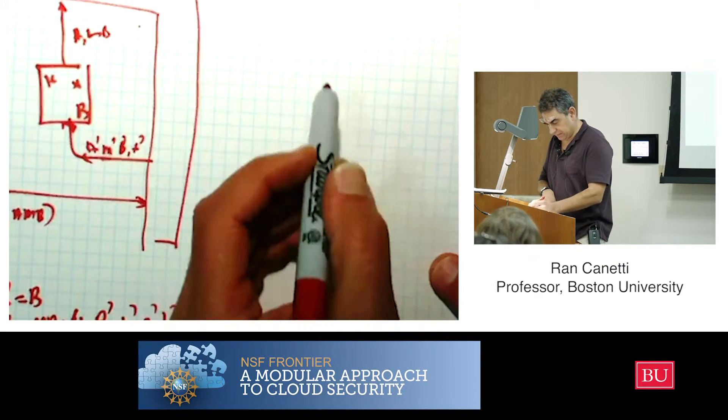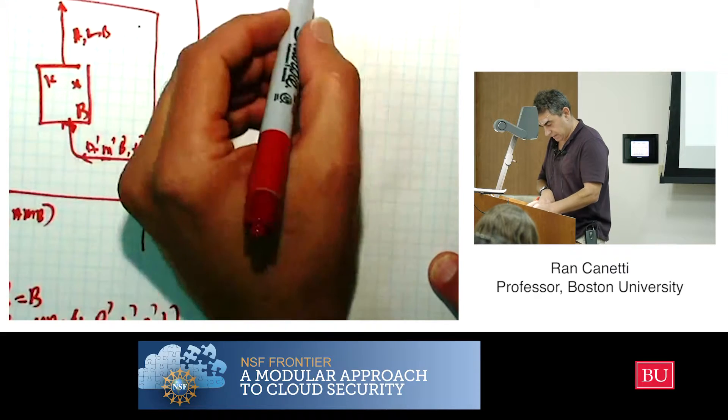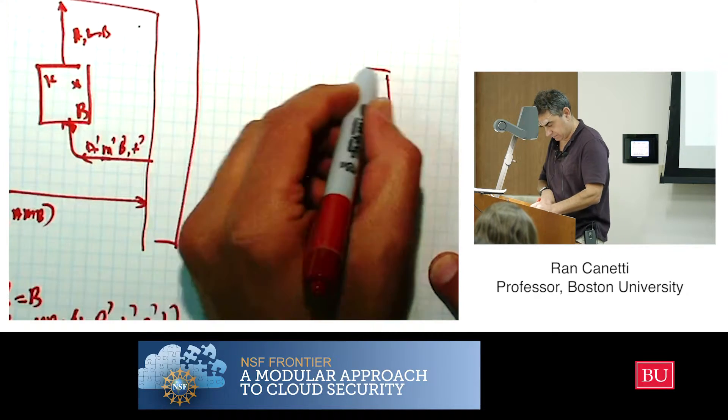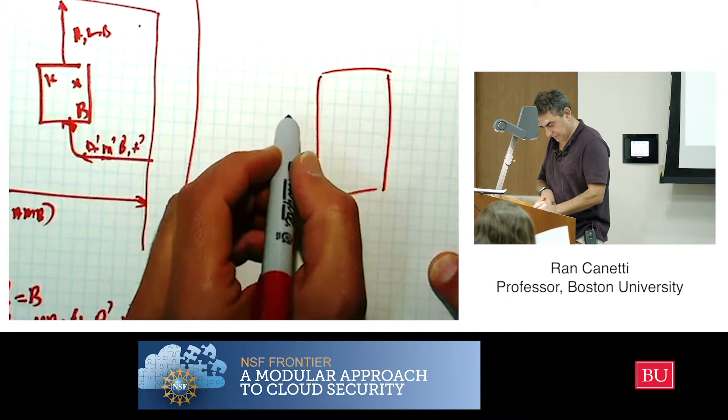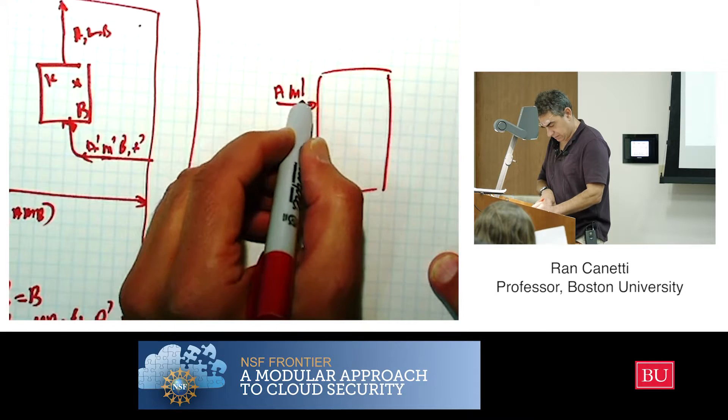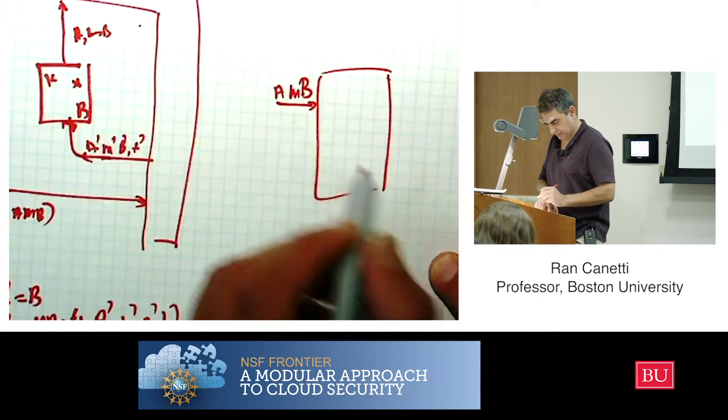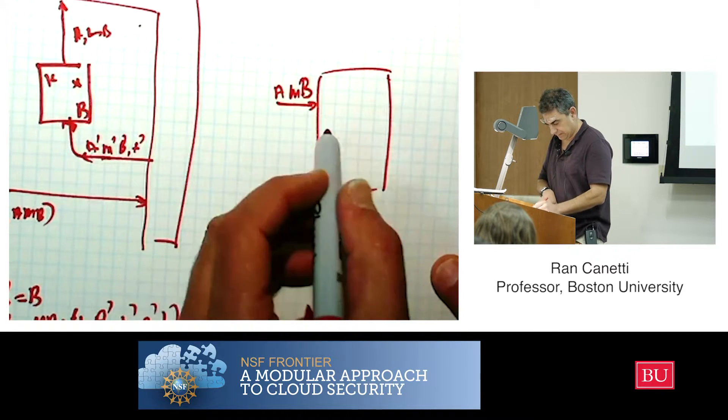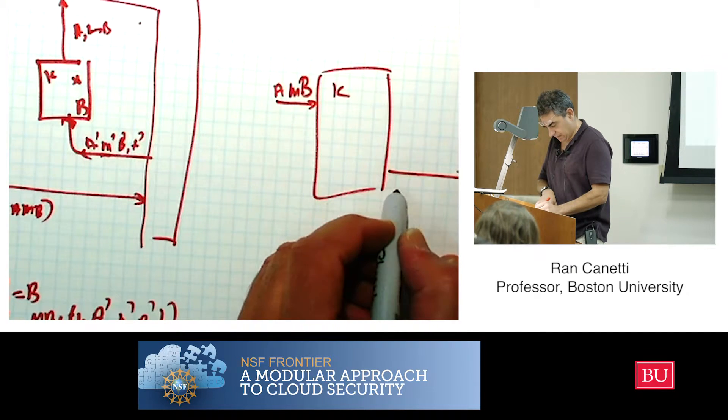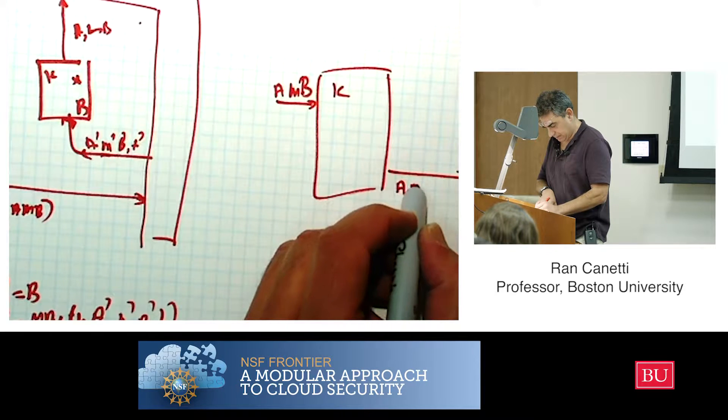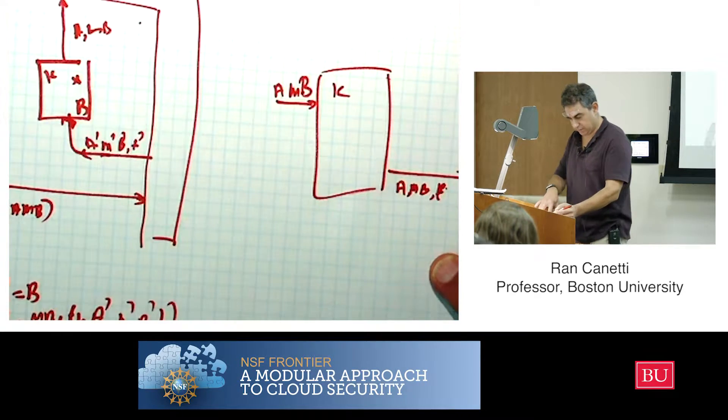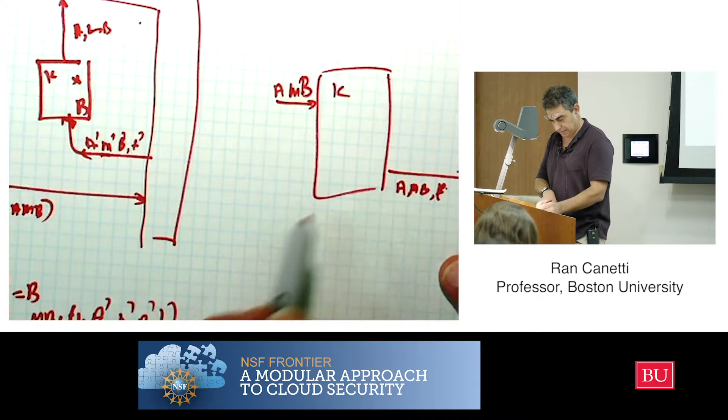Now, in the simulation, remember what's going on here. We have the simulator, he gets a message A, M, B from the ideal service. It chooses a key K, and then it sends to the environment A, M, B, and T computed in the same way as here, but with the key that the simulator chose.